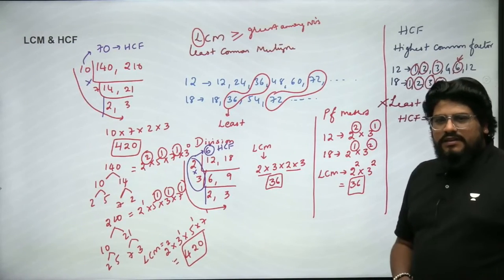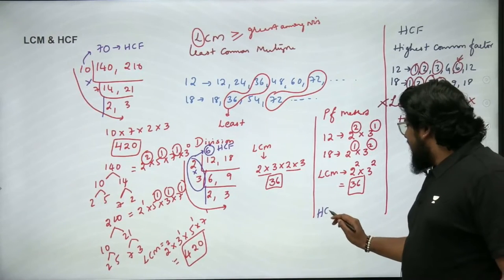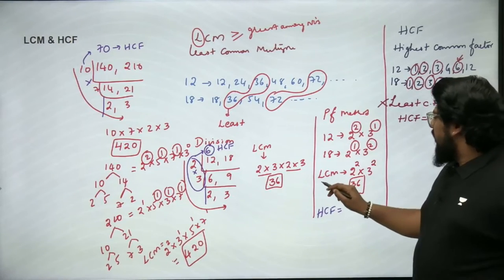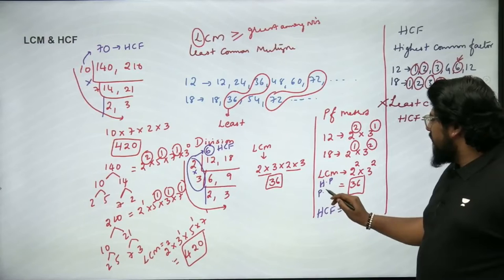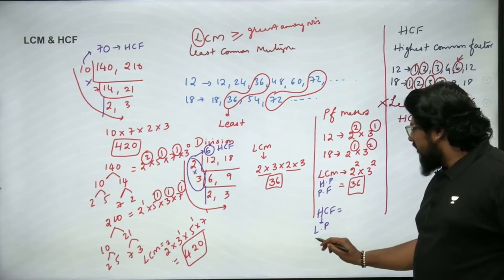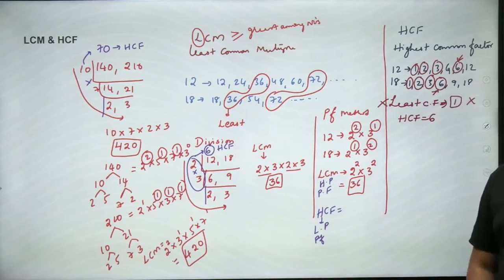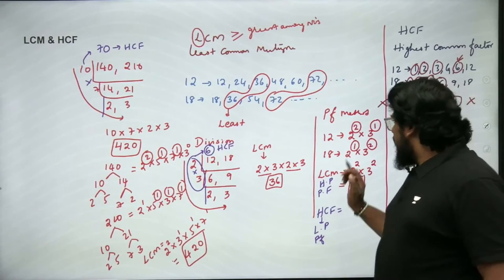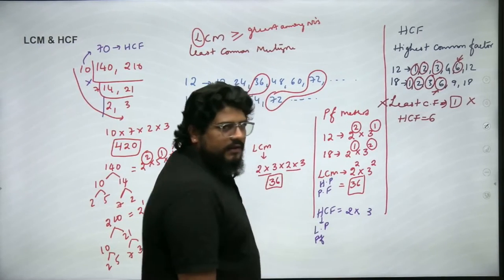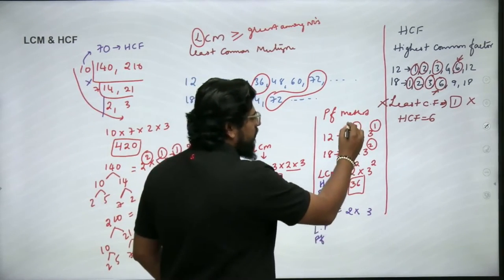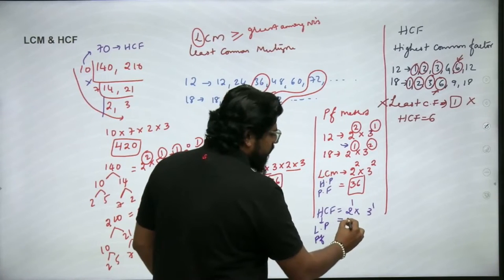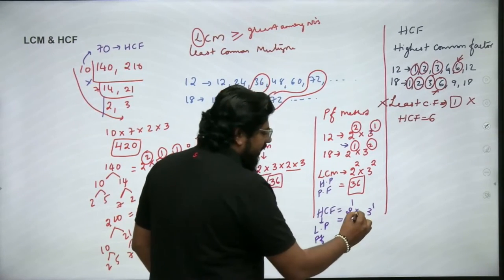For the prime factorization method to find HCF: in LCM, we take the highest power of prime factors. For HCF, we take the least power of the prime factors. For 12 and 18, the prime factors are 2 and 3. Least power of 2 is 1, least power of 3 is 1. So HCF = 2¹ × 3¹ = 6.